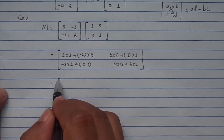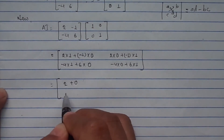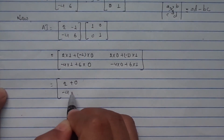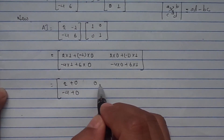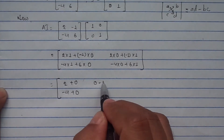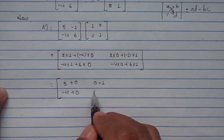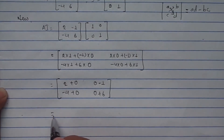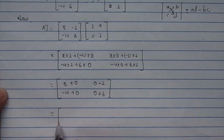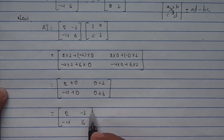This equals: 2+0, 0+(-1), -4+0, 0+6 — which gives us [2, -1; -4, 6]. So AI equals A, as expected with the identity matrix.